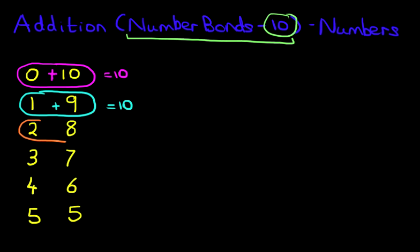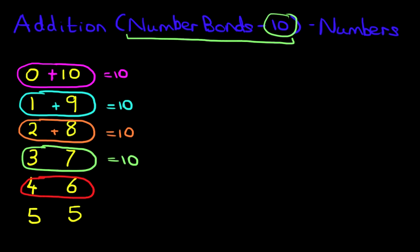The next one, 2 and 8. They also make 10. 3 and 7, that also equals 10. Let's keep going. 4 and 6 equals 10. And the last one, double 5. 5 plus 5 is double 5. That also equals 10.